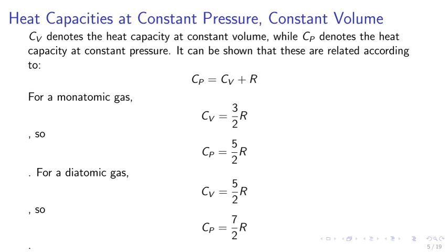Heat capacities at constant pressure and constant volume. CV denotes the heat capacity at constant volume while CP denotes the heat capacity at constant pressure. It can be shown that these are related according to CP equals CV plus R. For a monatomic gas, CV equals 3/2 R, so CP equals 5/2 R. For a diatomic gas, CV equals 5/2 R, so CP equals 7/2 R.